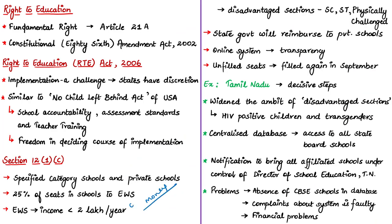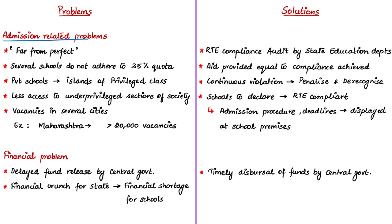The state government provides funds to schools for textbooks and uniforms for these children, but schools are directly collecting money from children instead. This is happening because the central government does not release funds in the right time. A major problem is the process of admission under Section 12.1C, which the authors describe as far from perfect, because several schools do not adhere to this 25% quota as mandated by the legislation. The author states that private schools have become islands of privileged class, reluctant to provide this 25% opportunity for children of weaker sections.